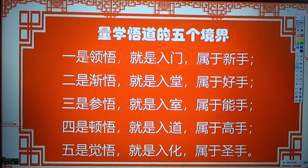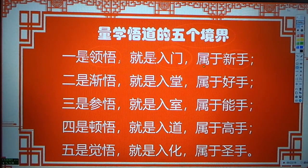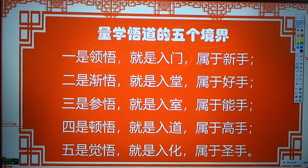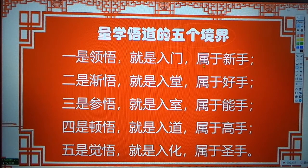要懂最基本的涨跌预判，要懂真假涨跌，要懂庄性的强弱，要懂庄家最基本的操盘手法和思路。这些就是我们学习量柱情障情应该把握的最基本的内容。当把这些内容真正精通了，那个时候我们仅仅属于新手，属于量学一段的水平。